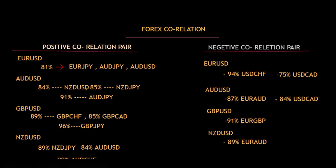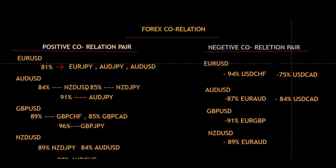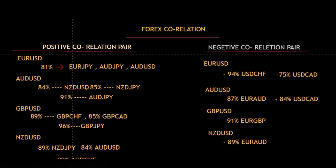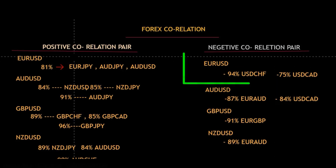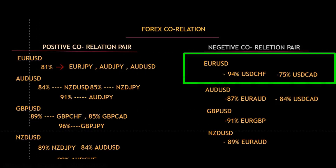Now I will show you the negative correlation pairs — the pairs that flow in the opposite direction. Earlier we discussed positive correlation where pairs move in the same direction. Now for negative correlation: the first is euro/USD — USD/CHF has 94% negative correlation with euro/USD. In other words, if euro/USD is in an uptrend, then USD/CHF will be in a downtrend.